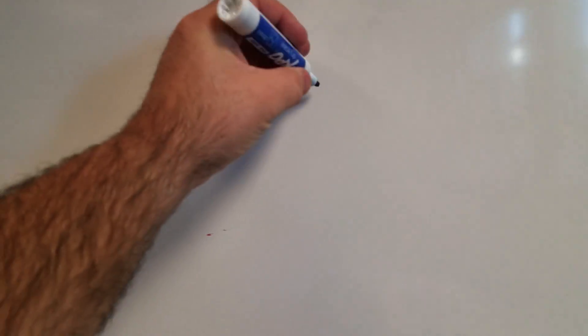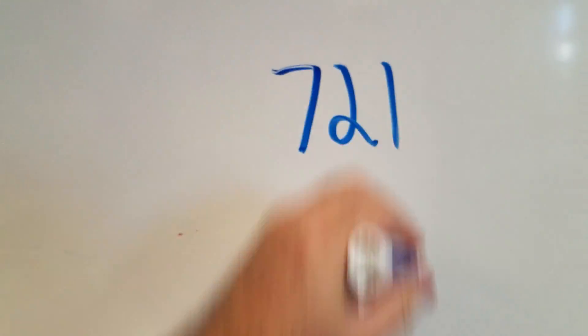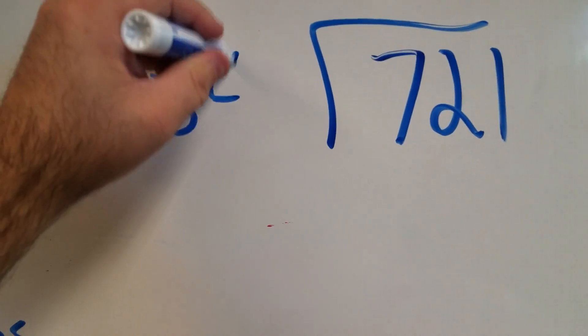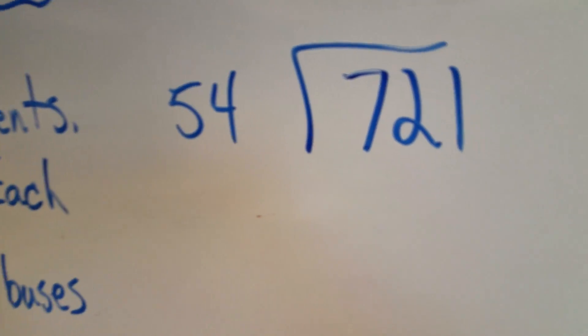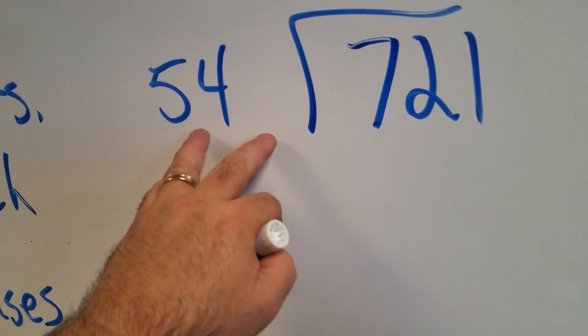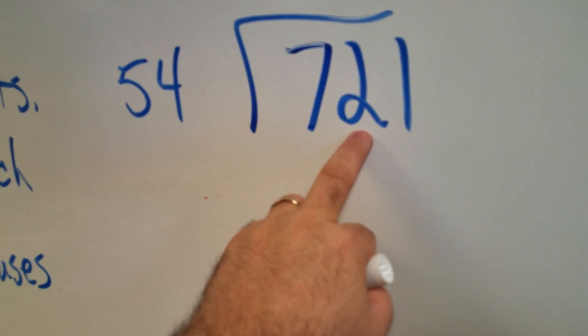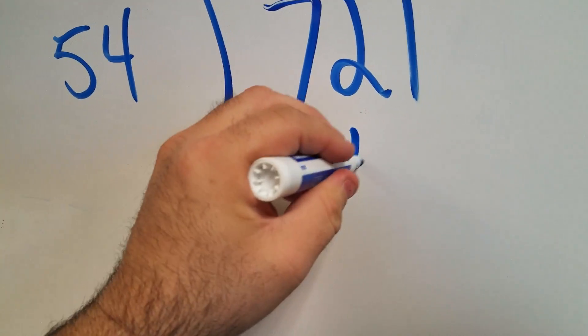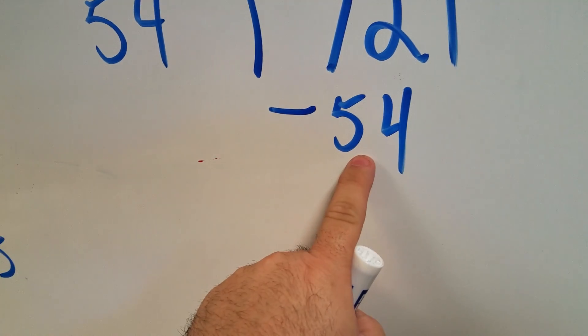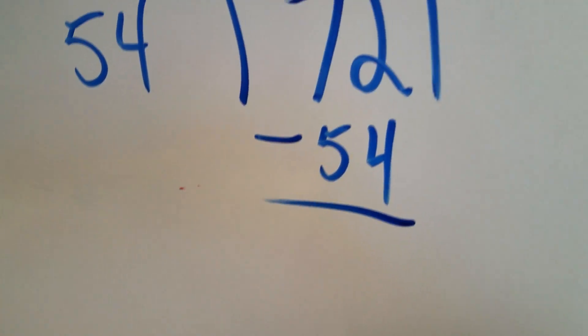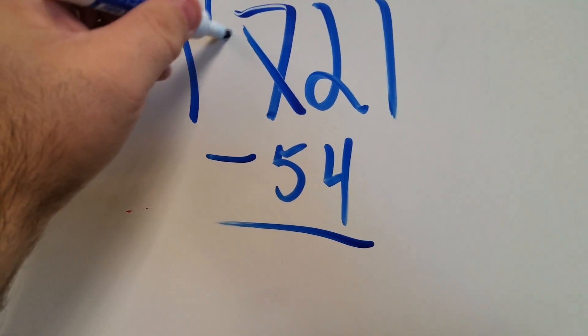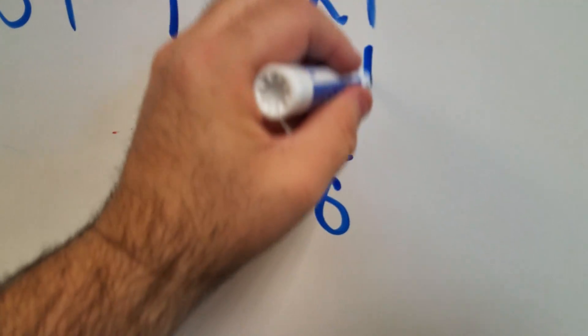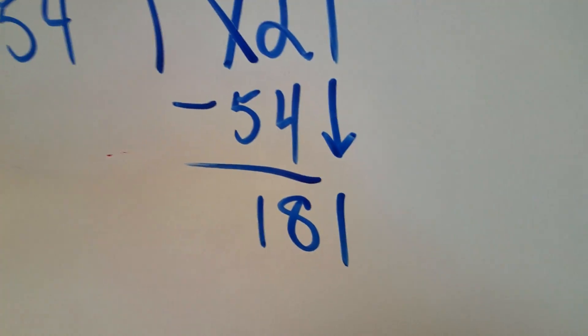Well that is a division problem. So I got 721 students. I'm going to divide that by my 54 student capacity bus. So I say, can 7 be divided by 54? No, it cannot. Can 72 be divided by 54? Yes, it can. One time. So, 54 times 1 is 54. Subtract that out. And I bring down the 1. So I have 181.